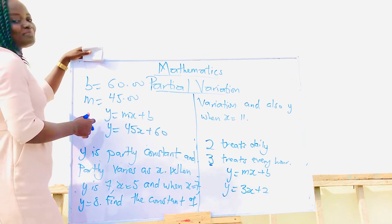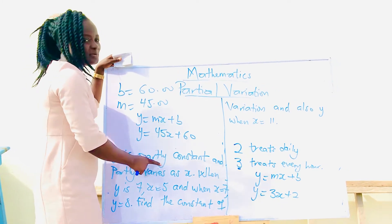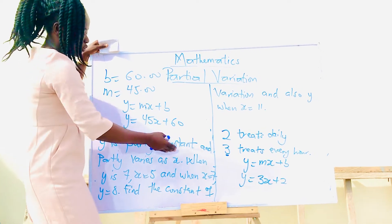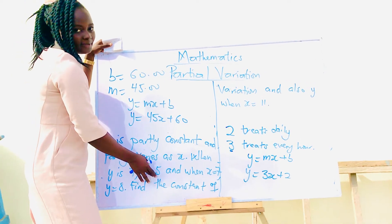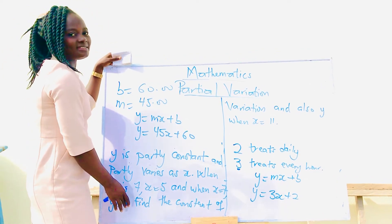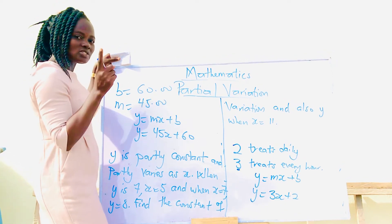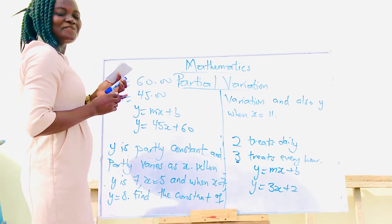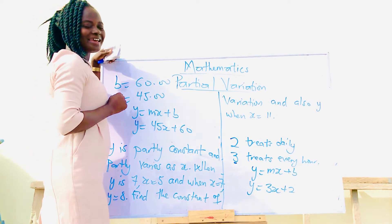Y is partly constant and partly varies as x. I believe you know how to write a statement. When y is 7, x is 5. And when x is 7, y is 8. Find the constant of variation, and also y when x is 11. I believe you remember our simultaneous equation. We are going to apply it here.